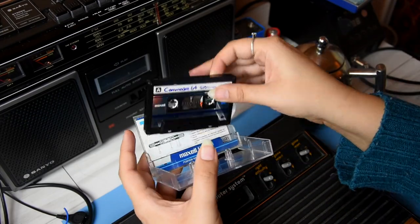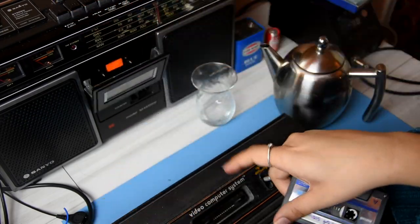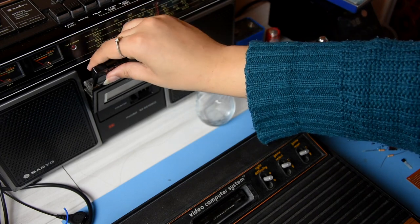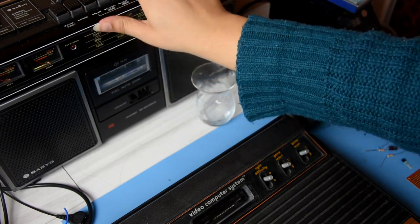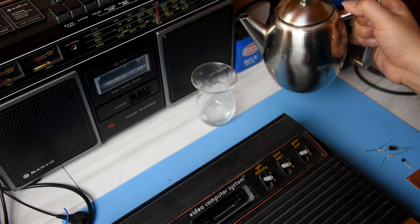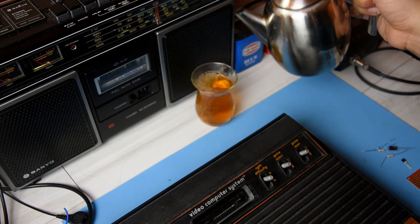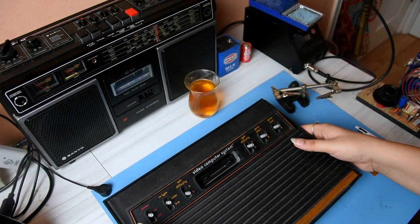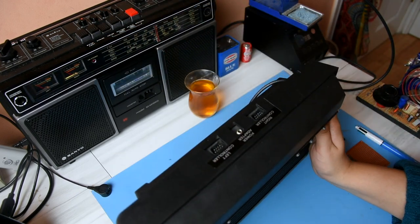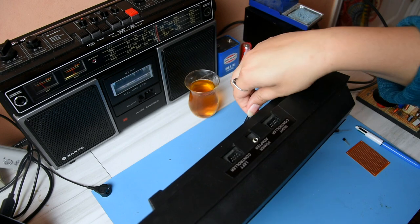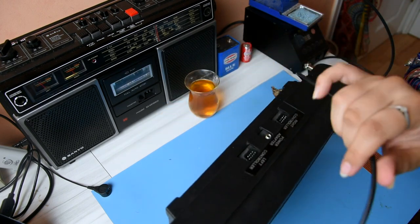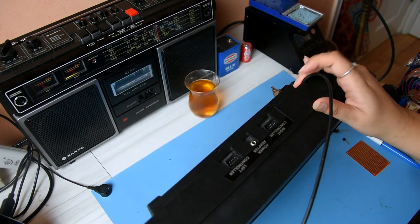Hello and welcome. Today we have the Atari 2600 here and we're going to do a composite mod on this thing. So if you know the 2600, you'll know that there is really absolutely no option other than the built-in RF cable.